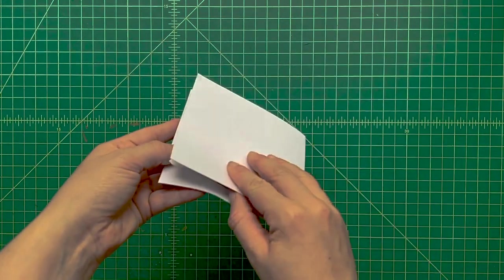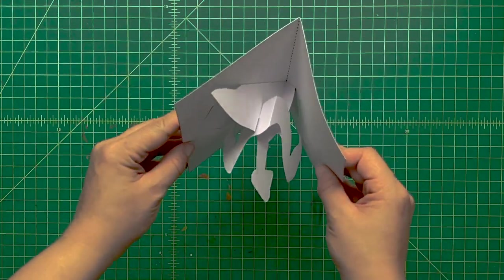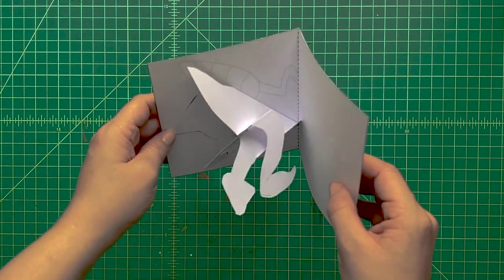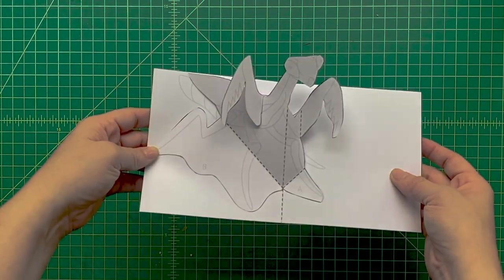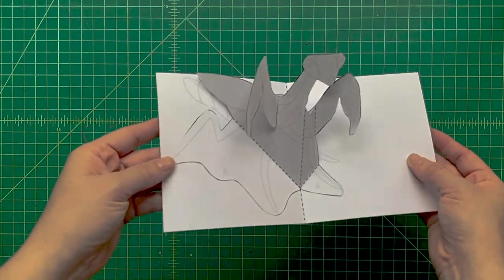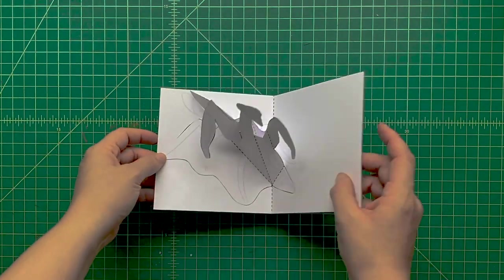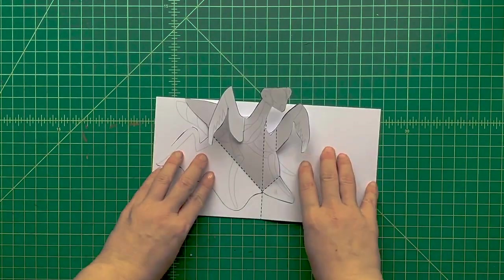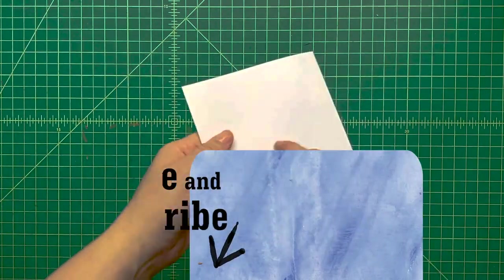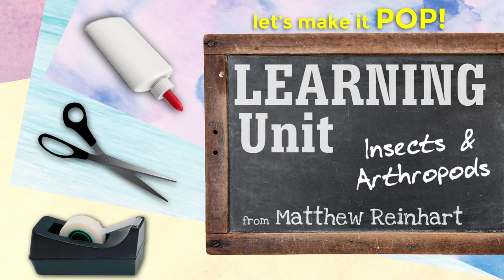Now you can decorate it with markers, crayons, or colored pencils. You can write a story about it or write some facts. You can learn all you want about praying mantises, which is part of this learning unit insects and arthropods. I hope you've enjoyed this learning unit and making insects pop with me. It's Matthew Reinhart saying see you next time.